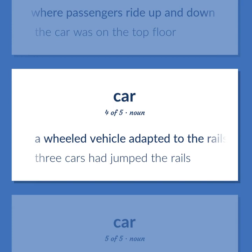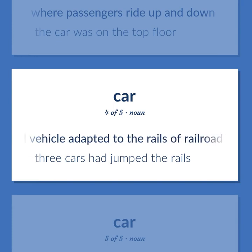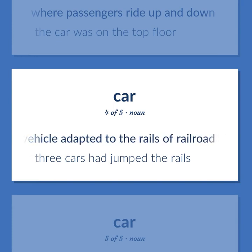CAR: A wheeled vehicle adapted to the rails of a railroad. Example: Three cars had jumped the rails.